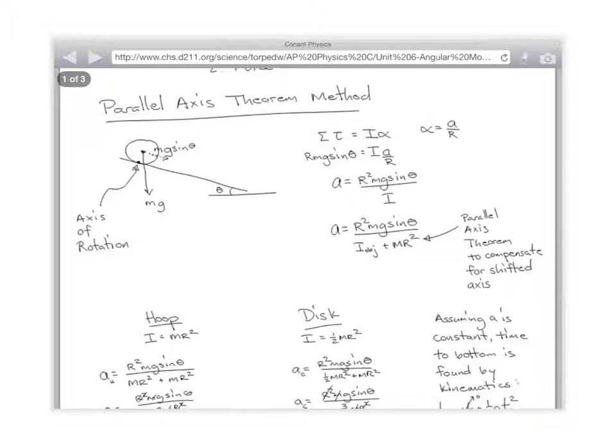So torque is rmg sine theta. I is I. And alpha, if you think about it, is a over r, where a is how quickly it's going to accelerate, which is what we were trying to find in the first place, right? So we're trying to solve for a. So a equals r squared mg sine theta over I. Wait. No, we're not. We need the total I, which is I of the object plus mr squared. So the final answer is, it's going to accelerate at r squared mg sine theta over I of the object plus mr squared.